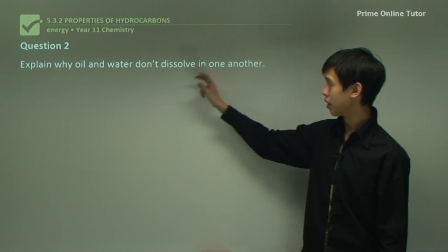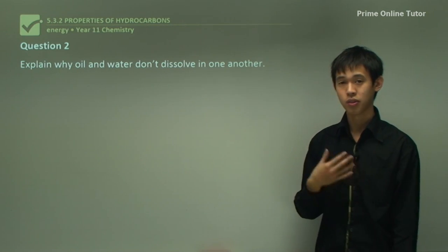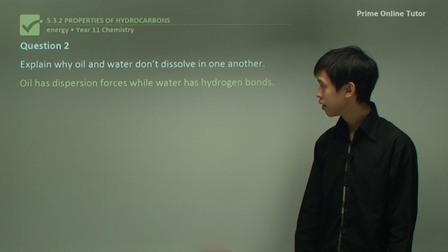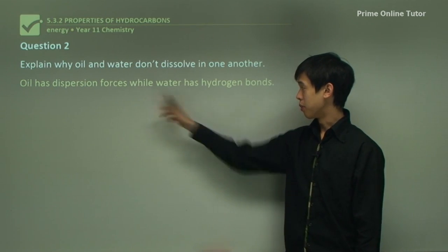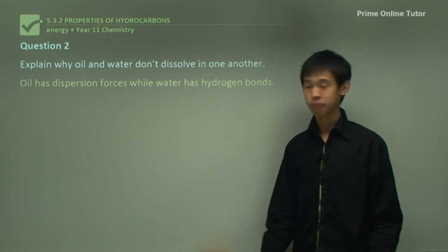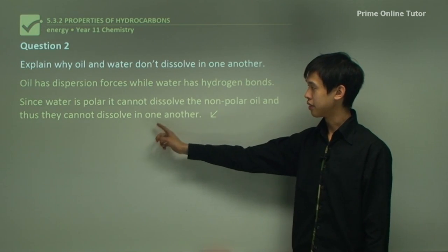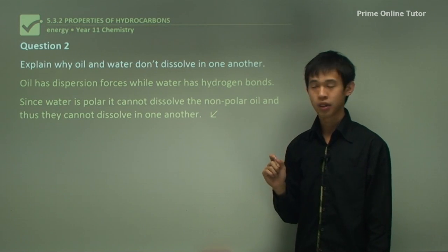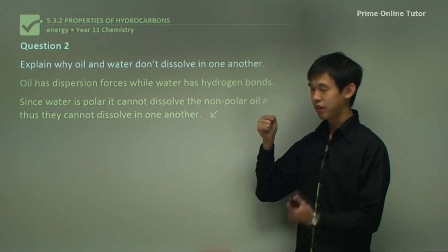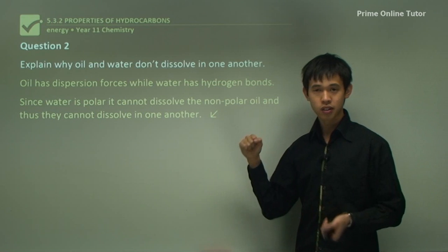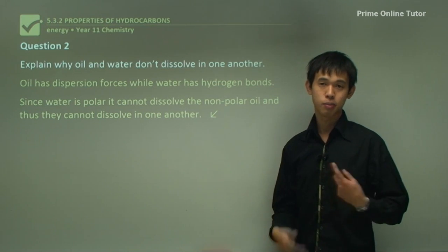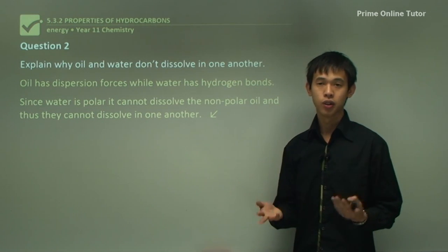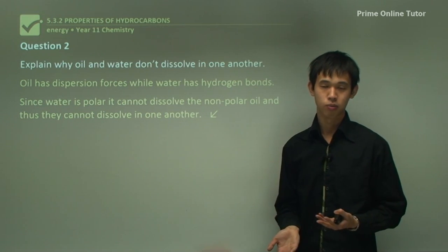Question two: explain why oil and water don't dissolve in one another. Oil has dispersion forces while water has hydrogen bonds. Since water is polar, it cannot dissolve the non-polar oil, and thus they cannot dissolve in one another. Because the water is polar, oil molecules can't make enough room for themselves to be surrounded by water molecules, so we get no dissolution — just an emulsion.